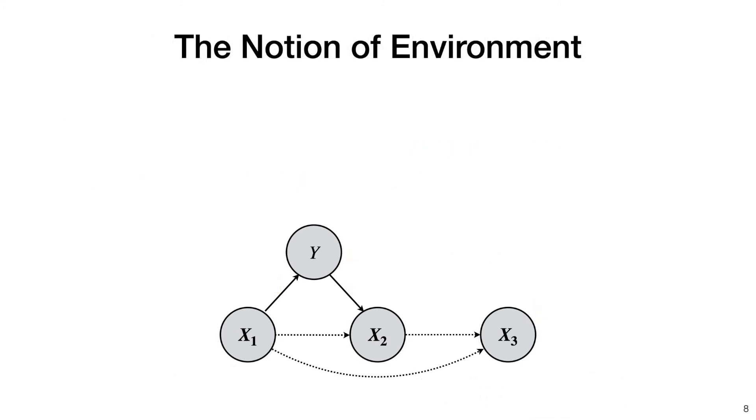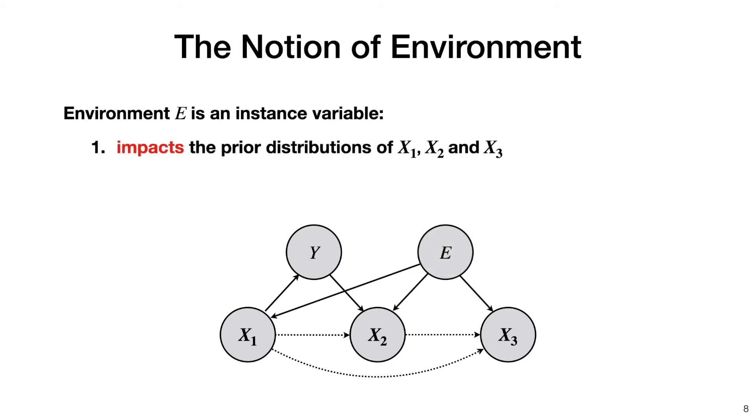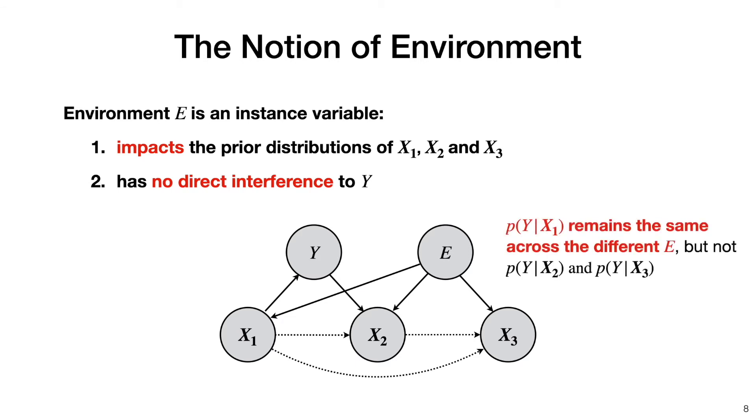Formally, a set of environments is defined as a variable e that impacts only the prior distribution of x1, x2, and x3, as shown on the probabilistic graph, but does not have a direct edge to y. Then x1 can be distinguished from x2 and x3 because p of y given x1 will remain the same across the different e, but neither p of y given x2 nor p of y given x3 does.